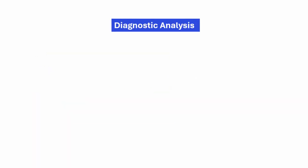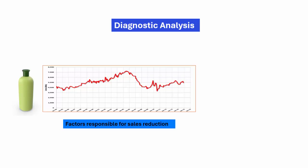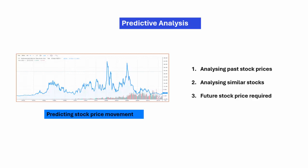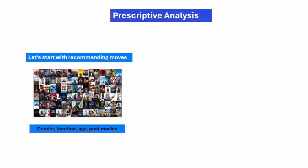For diagnostic analysis, the factor responsible for sales reduction — analyzing past data to find which factors affect sales positively or negatively — with no future forecast required. For predictive analysis, predicting stock price movement involves analyzing past stock prices and similar stocks to forecast future stock price. That is predictive analysis.